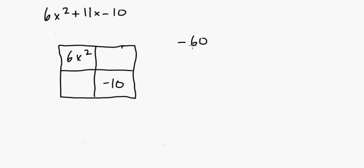So I'm going to do 6 times -10, which is -60. Now I want to get two factors that are going to add up to b here. For 60, I got 6 and 10, I got 4 and 15. So it's going to be 4 and 15.